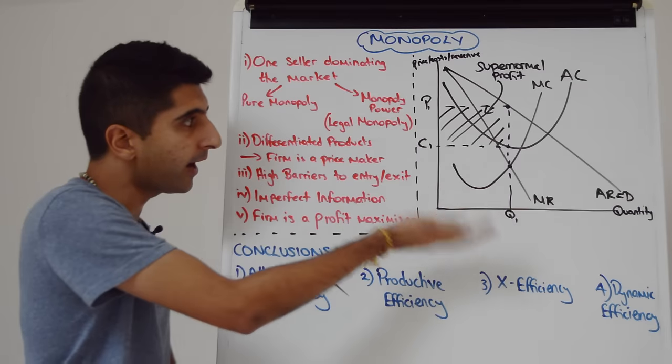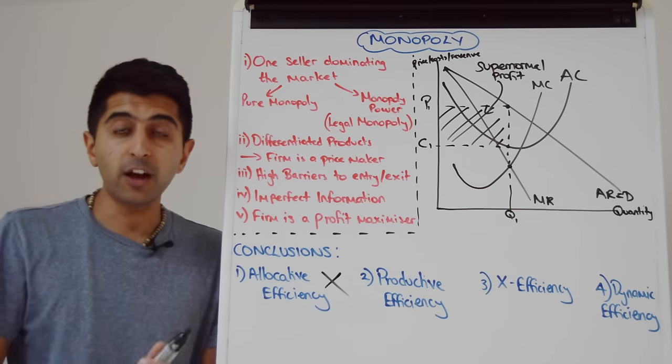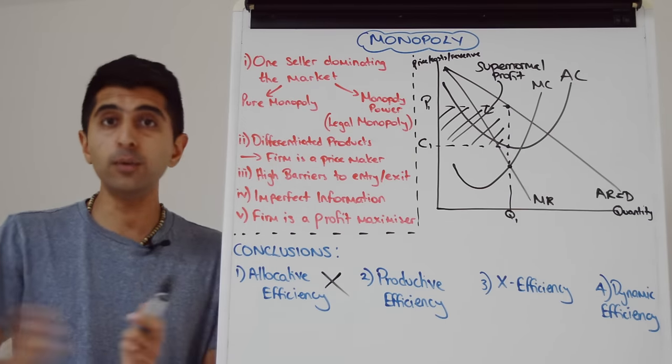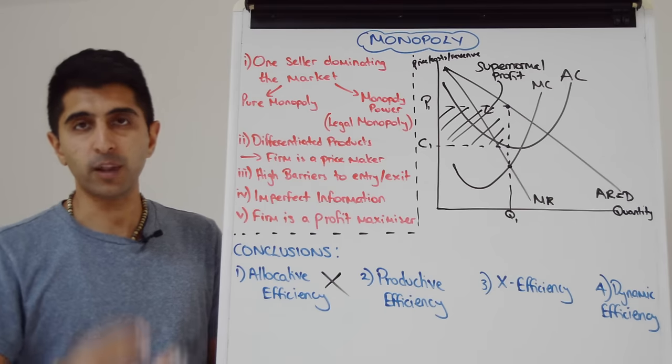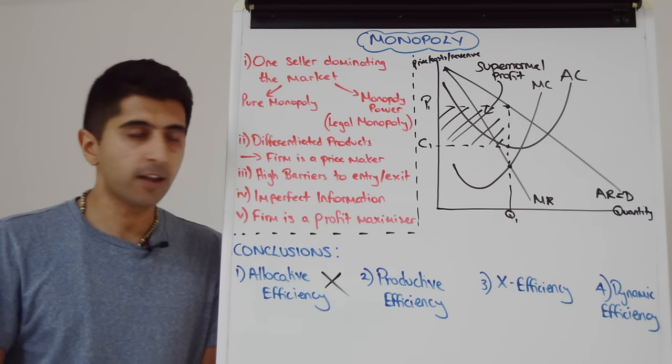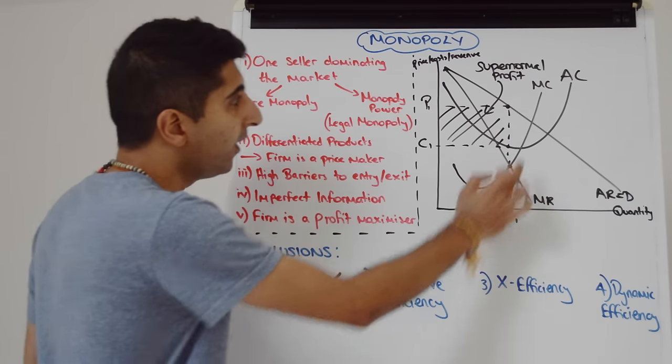They're charging a price greater than marginal cost exploiting consumers in that sense. So your analysis has got to be, yeah, P is higher than MC. Monopolies are charging a price higher than what it costs. And in doing so, they're exploiting consumers with high prices, low consumer surplus.